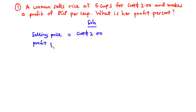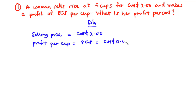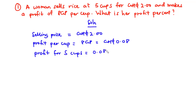She makes a profit of 8 Ghana pesewas per cup, which equals 0.08 Ghana cedis. Since she sold five cups, we multiply 5 by 0.08 to get the total profit for five cups: 0.08 × 5 = 0.40 Ghana cedis.